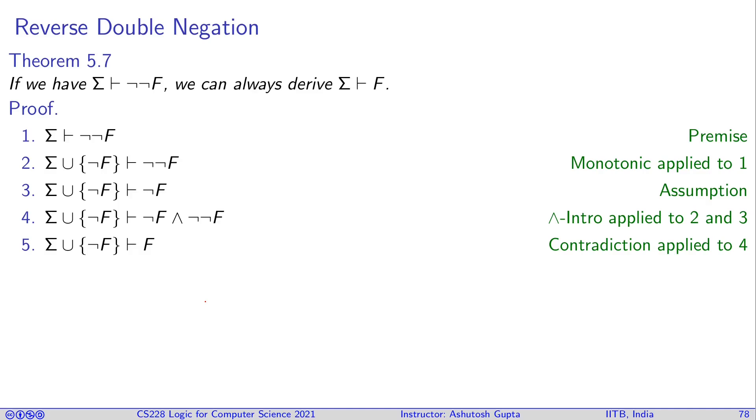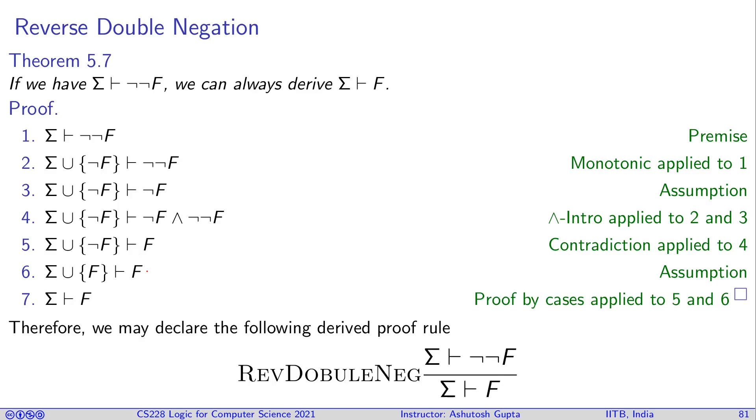Now you have not F proving F. What you can do is by assumption, you can say that if you had written F here, you could have derived F. So now you have by cases: if you derive F or not F, then if you have not F, you could have derived F. This F derives F. Therefore I can say that I can derive F. And we can turn this into a proof rule. Anytime I want, I can remove the double negation.